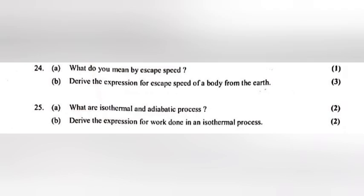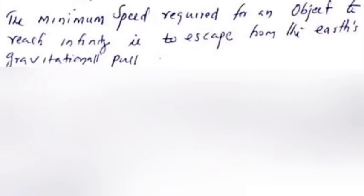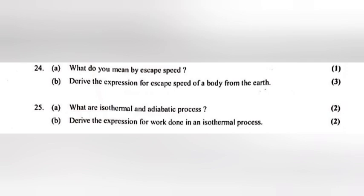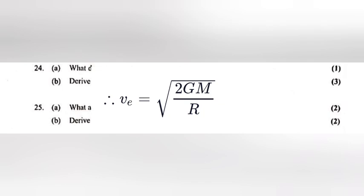Question 24A: What do you mean by escape speed? Answer: The minimum speed required for an object to reach infinity to escape from the earth's gravitational pull. 24B: Derive the expression for escape speed of a body from the earth. Answer: VE is equal to root of 2GM by R.